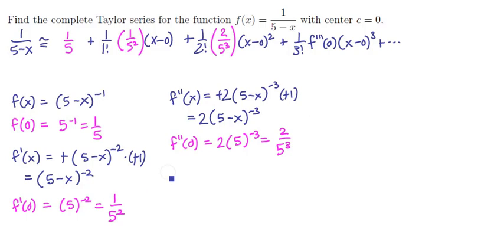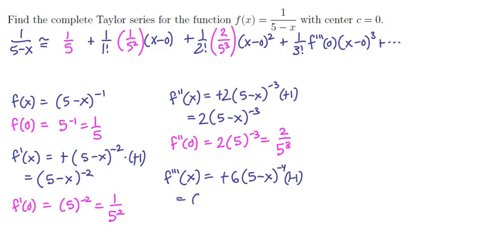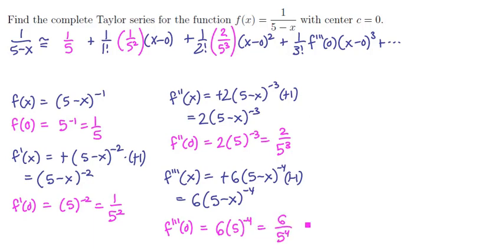For the third derivative, we drop the power down again: minus 6 times (5 minus x) to the minus 4, times the inside derivative of minus 1 — signs cancel, giving 6 times (5 minus x) to the minus 4. Plugging in 0, f'''(0) equals 6 times 5 to the minus 4, or 6 over 5 to the 4th.